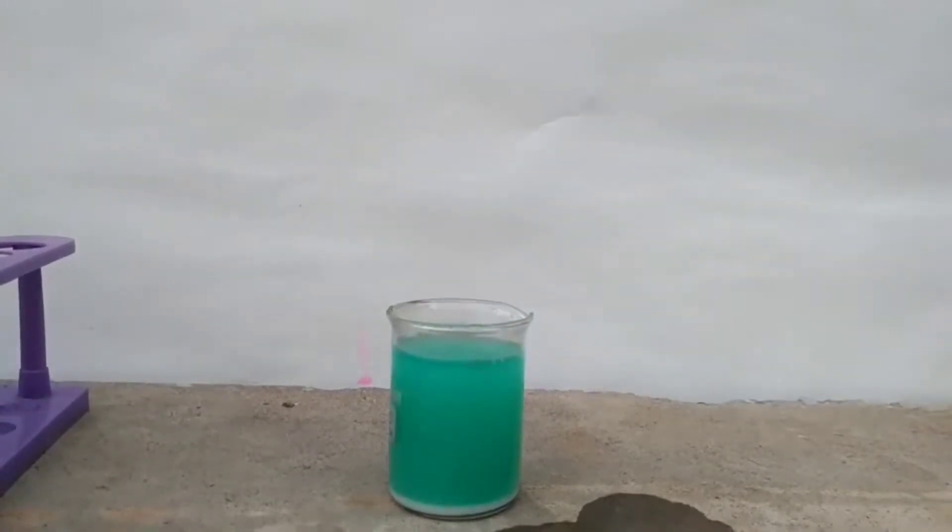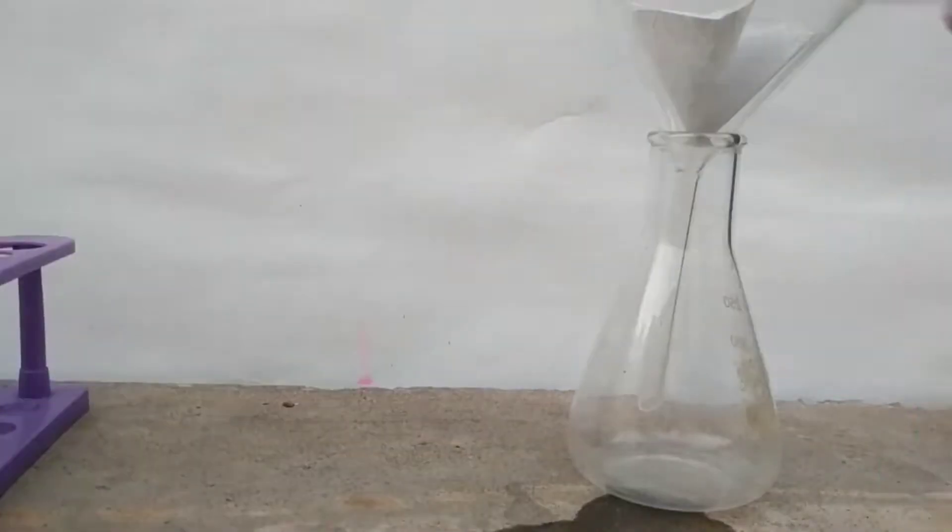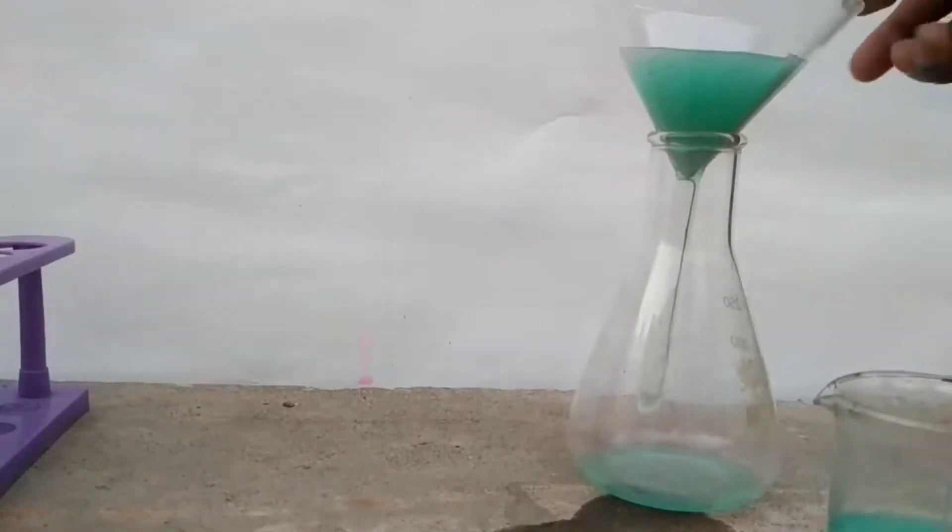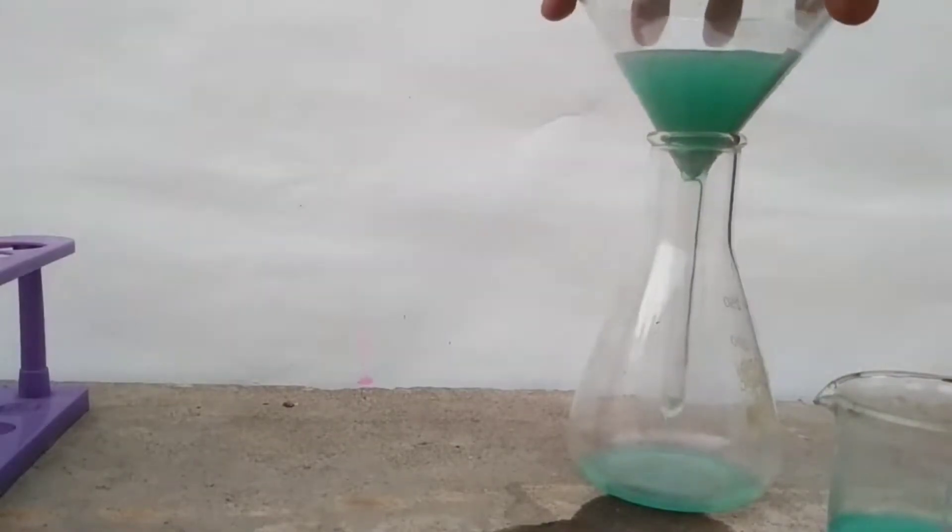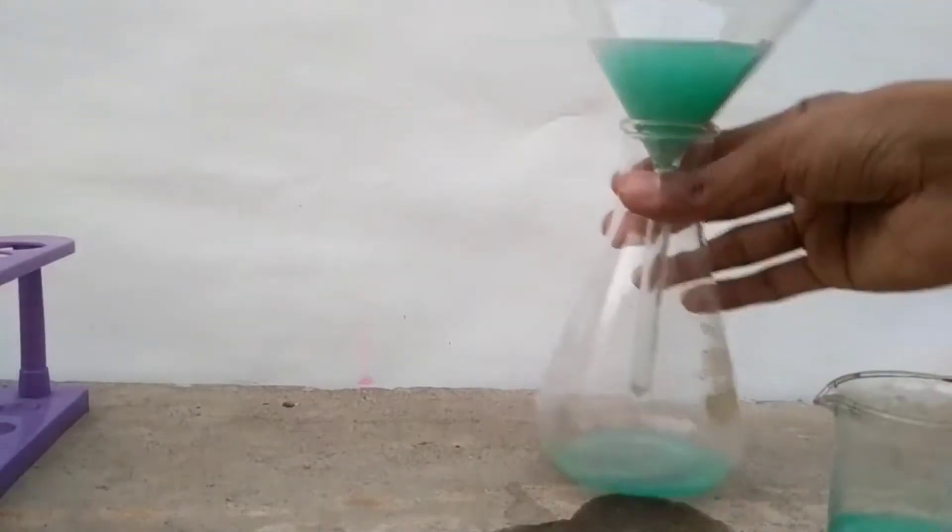Now it's time to filter this solution. I am using regular gravity filtration. You can see that the filtrate is green in color. It is due to nickel chloride as well as cupric chloride, because both the salts are green in color. But the cupric chloride color is more bluish green and dark in color compared to nickel chloride.